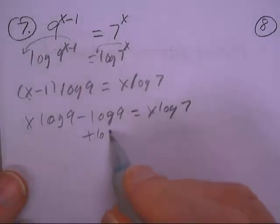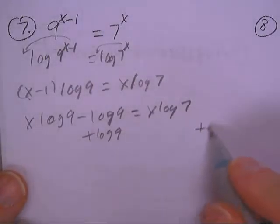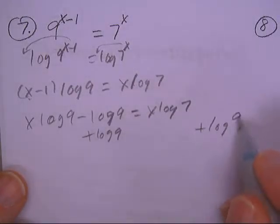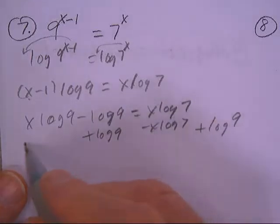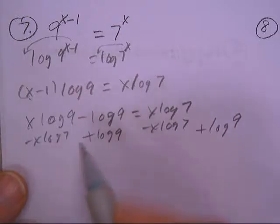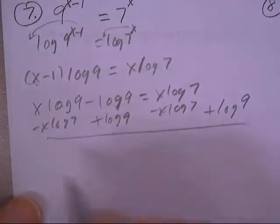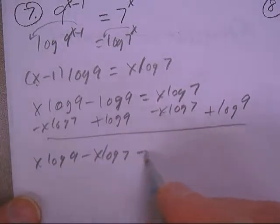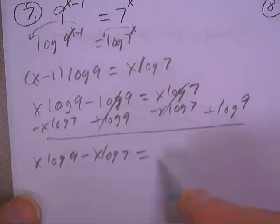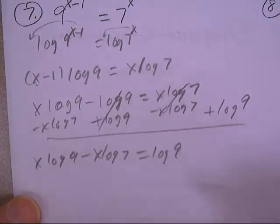Then I'll move this term over here and that one over here. When I do that, I get x log 9 minus x log 7 equals log 9.